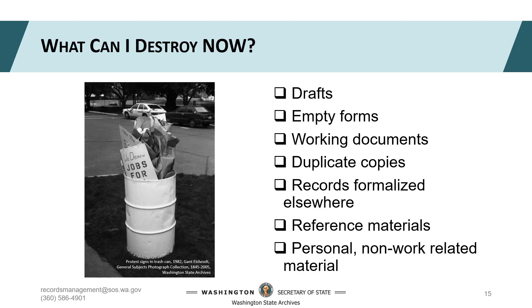So what can you destroy now? Transitory records have temporary informational value and should be deleted or recycled as soon as possible. You'll find a whole section of record series at the end of both the CORE and State General Schedule that will help you connect your transitory records to the appropriate DANs for disposal. A significant percentage of the public records we create and receive are transitory. Your best defense against transitory records is to dispose of them as soon as you've identified the DAN that gives you the legal authority to do so. By getting rid of what you can, when you can, you'll make records management so much easier on yourself.